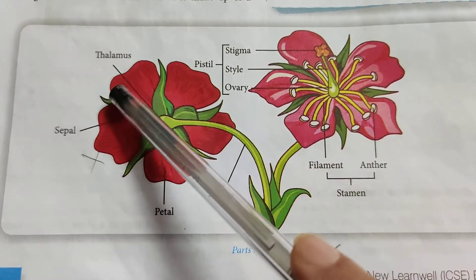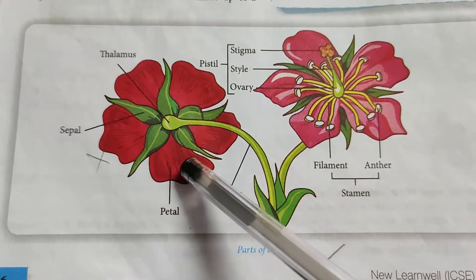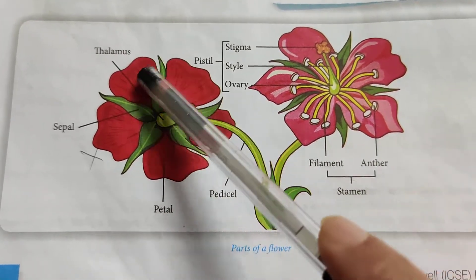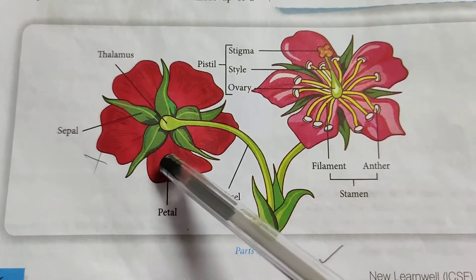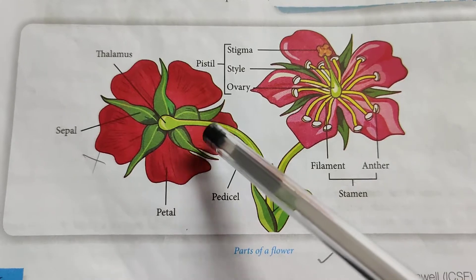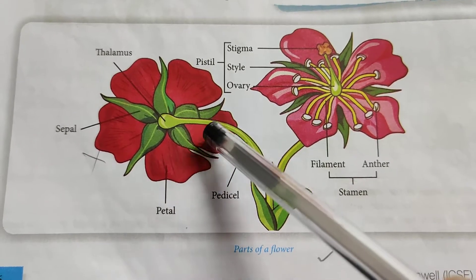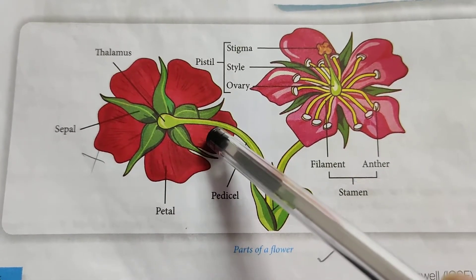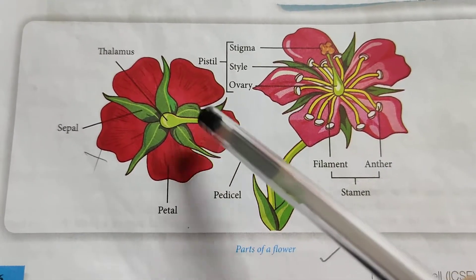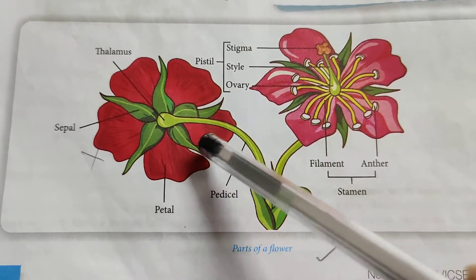The next whorl is corolla — these brightly colored petals. They are brightly colored to attract insects for the process of pollination.